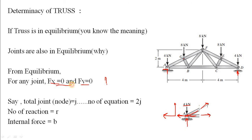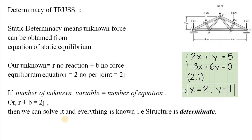So we use only two equations per joint. If the total number of joints is j, we can form 2j equations. In this truss, there are 7 joints, giving 14 equations. The total unknowns are r plus b, where r is the number of reactions and b is the number of members (internal forces). The total equations available are 2j.